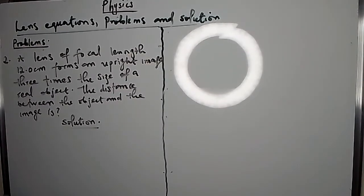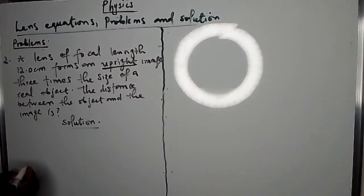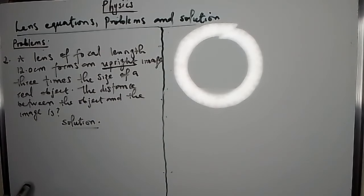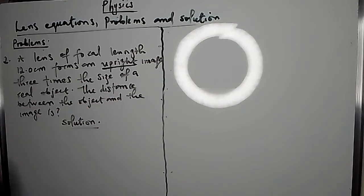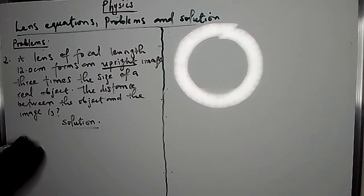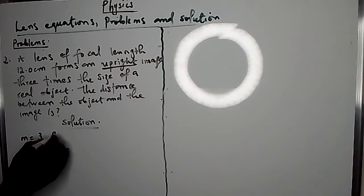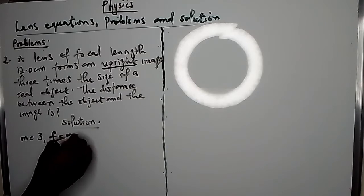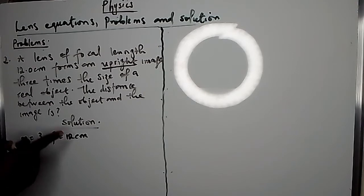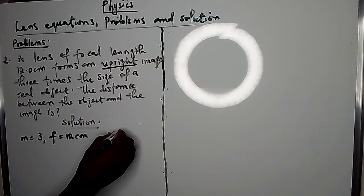Question 2: A lens of focal length 12 cm forms an upright image 3 times the size of the real object. The distance between the object and the image is what? We have a magnified upright image, which means we're dealing with a converging lens — a diverging lens always produces a diminished image. The magnification is 3, and the focal length is positive at 12 cm. Since the image is upright it is virtual, so V is negative.